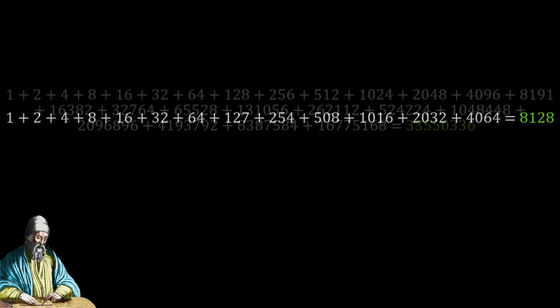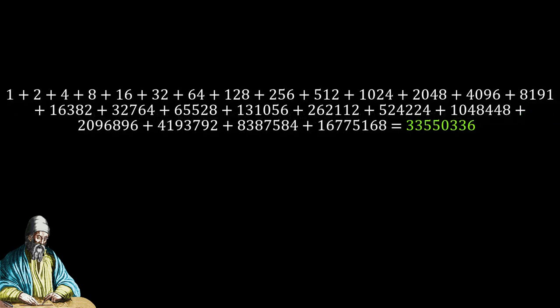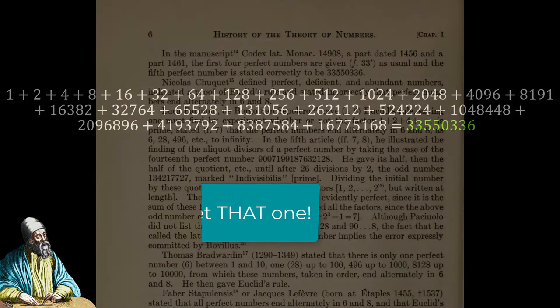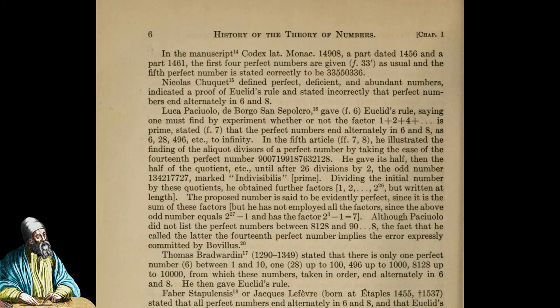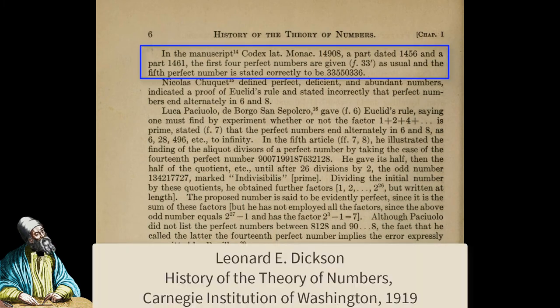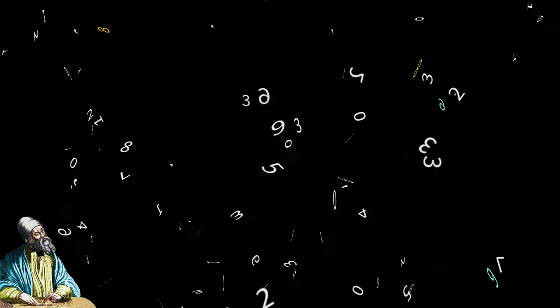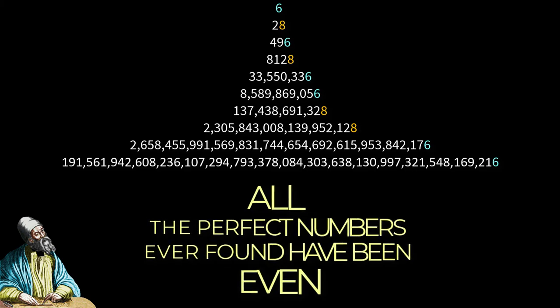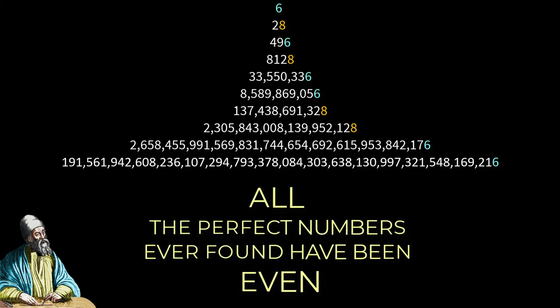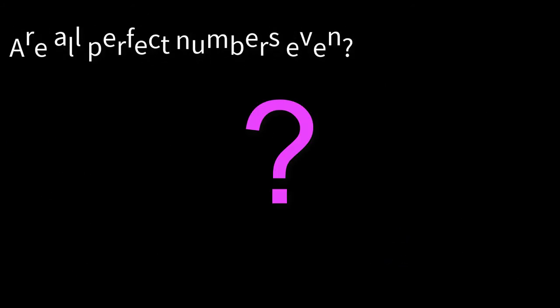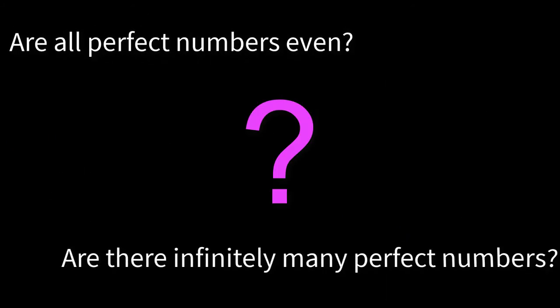How about the fifth perfect number, 33,550,336? The fifth perfect number only surfaced 1,700 years after Euclid's time in Germany in 1456. Here are the first 10 perfect numbers. 51 perfect numbers have been found to date. If you're feeling inspired, perhaps you can do what no one has yet done and prove whether or not all perfect numbers are even, and if they ever stop.